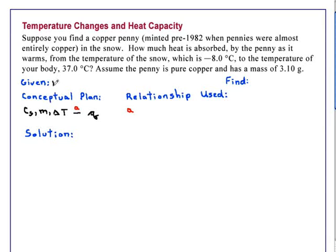So we have the mass of the copper, that is 3.10 grams. We have an initial temperature of minus 8.0 degrees C, and we have a final temperature of 37.0 degrees C. And we are asked to find the heat absorbed, Q, of the copper penny as it warms to body temperature.